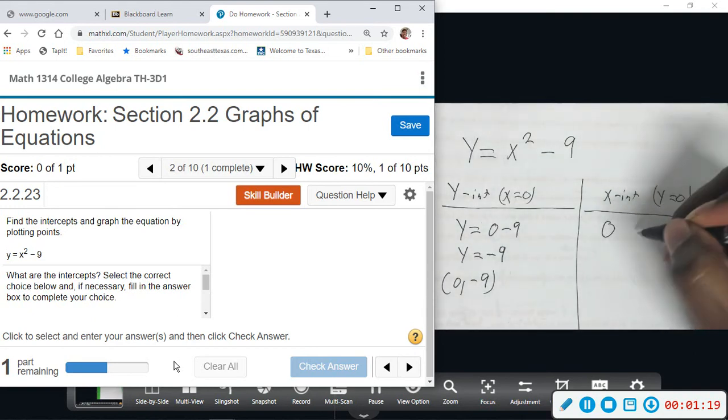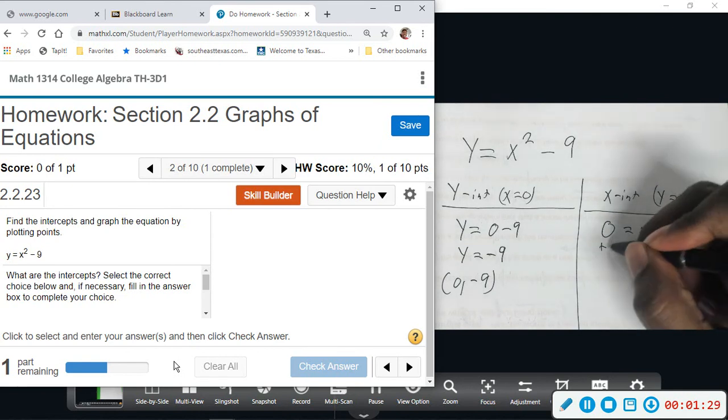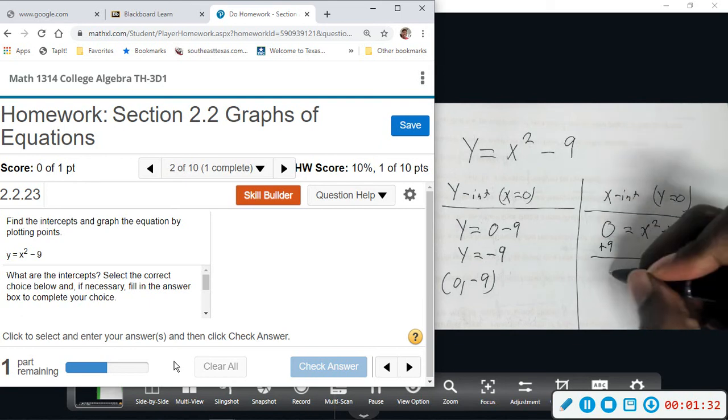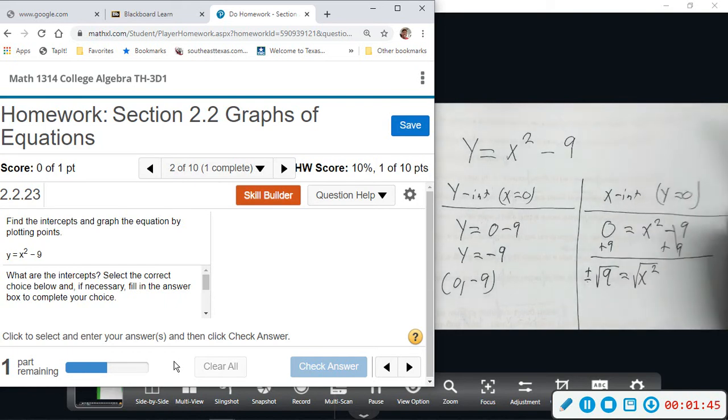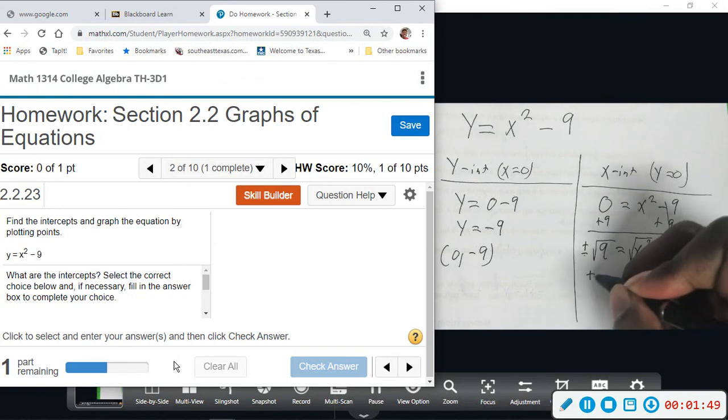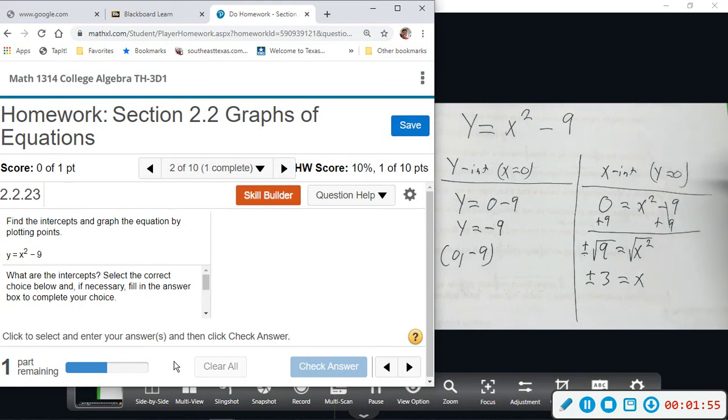And then over here we will make y equals zero. Solving for x, we would add nine and we get nine equals x squared. And we have to get rid of the square by taking the square root of both sides. When you take the square root of a number, you must remember positive or negative. So we get two possible numbers. We get plus or minus three for x. So this gives us two ordered pairs, two x-intercepts. We will have positive three, zero and negative three, zero because y is zero.